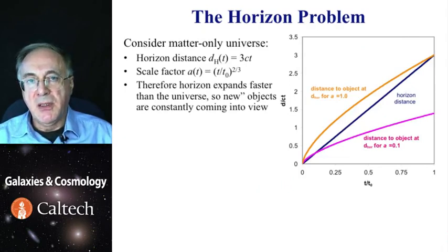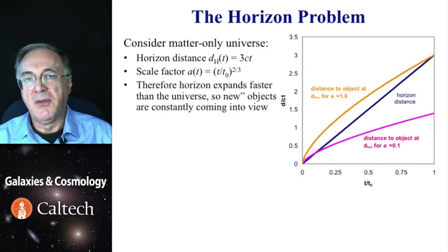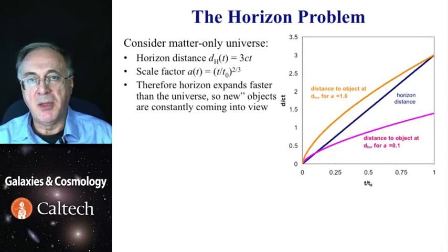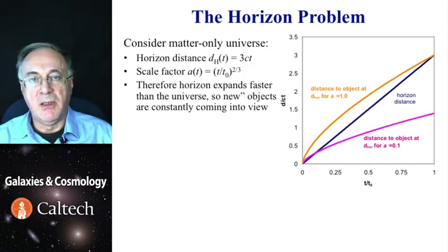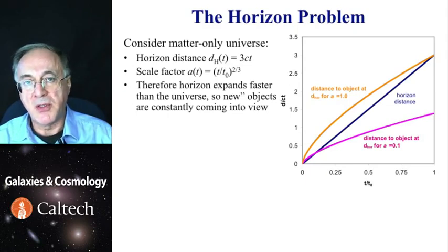The horizon problem can be stated this way: at any given time you can receive signals from points that are within the time elapsed from the Big Bang, and the particle horizon distance is three times speed of light times the age of the universe at that time. Now remember that early on scale factor goes as time to the two-thirds power, and so it means that the horizon expands faster than the universe, and as time goes on you get to see more and more objects come into it.